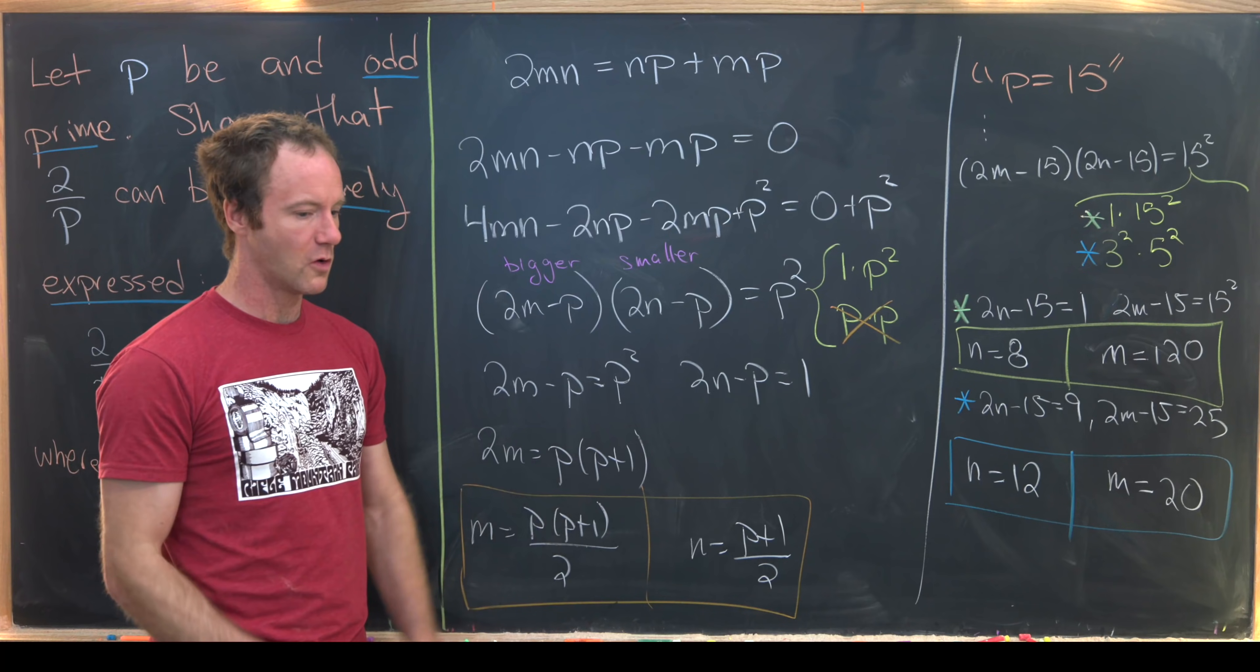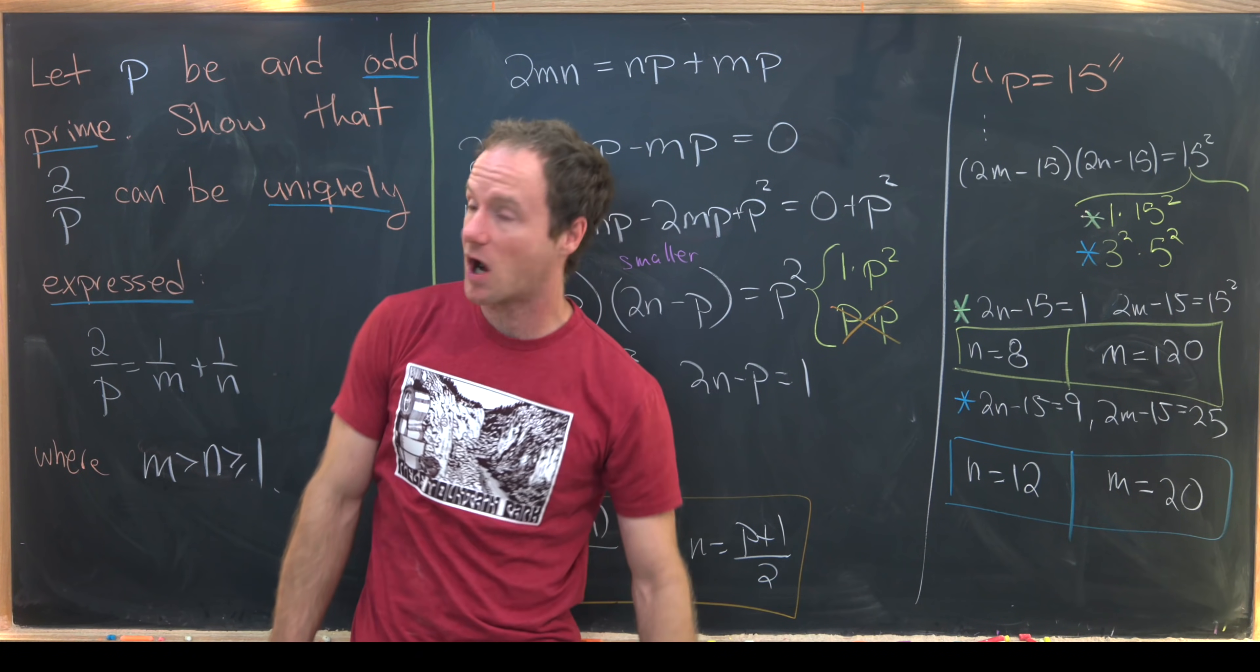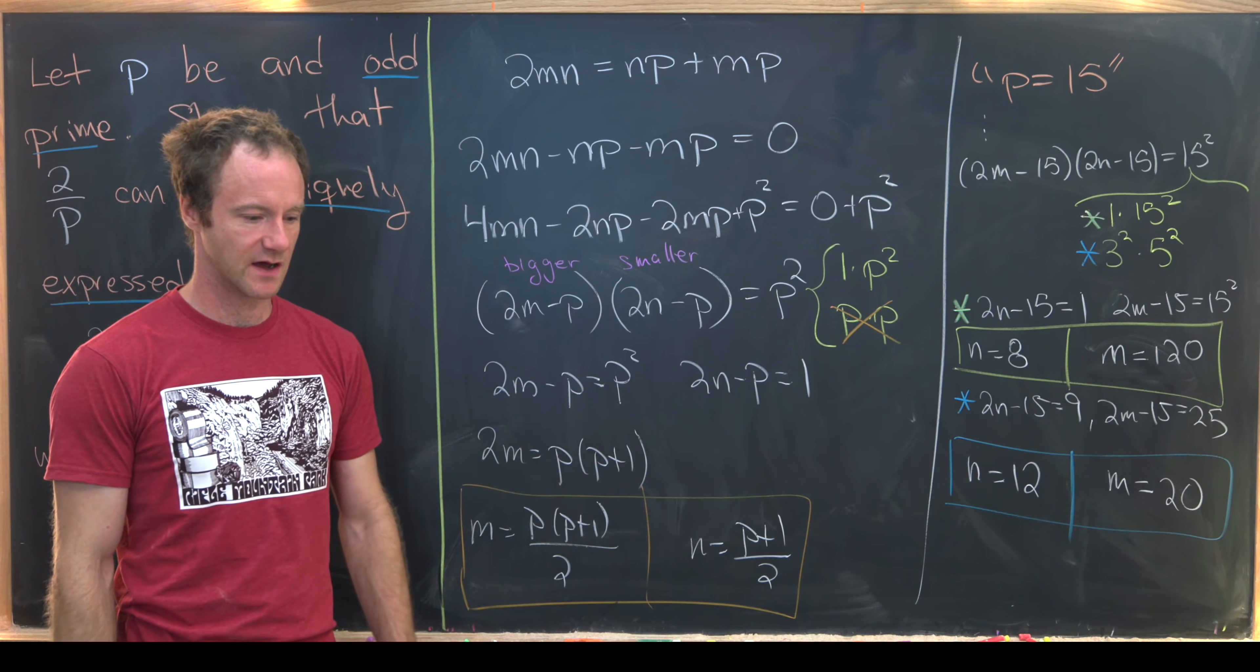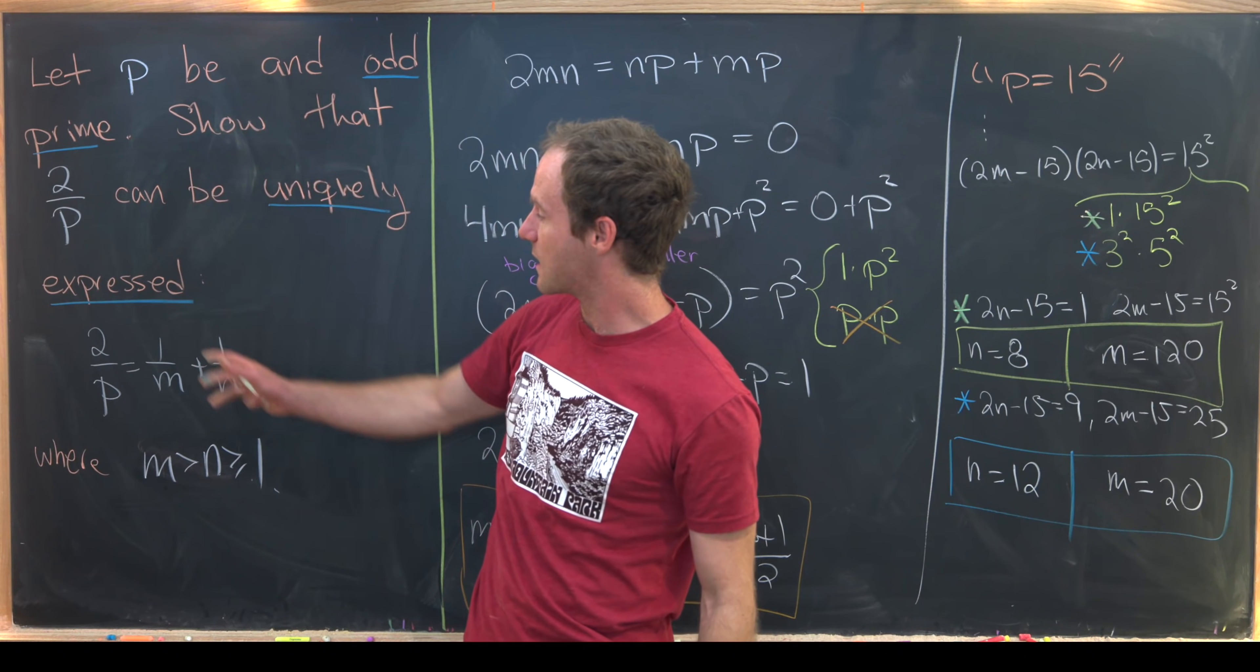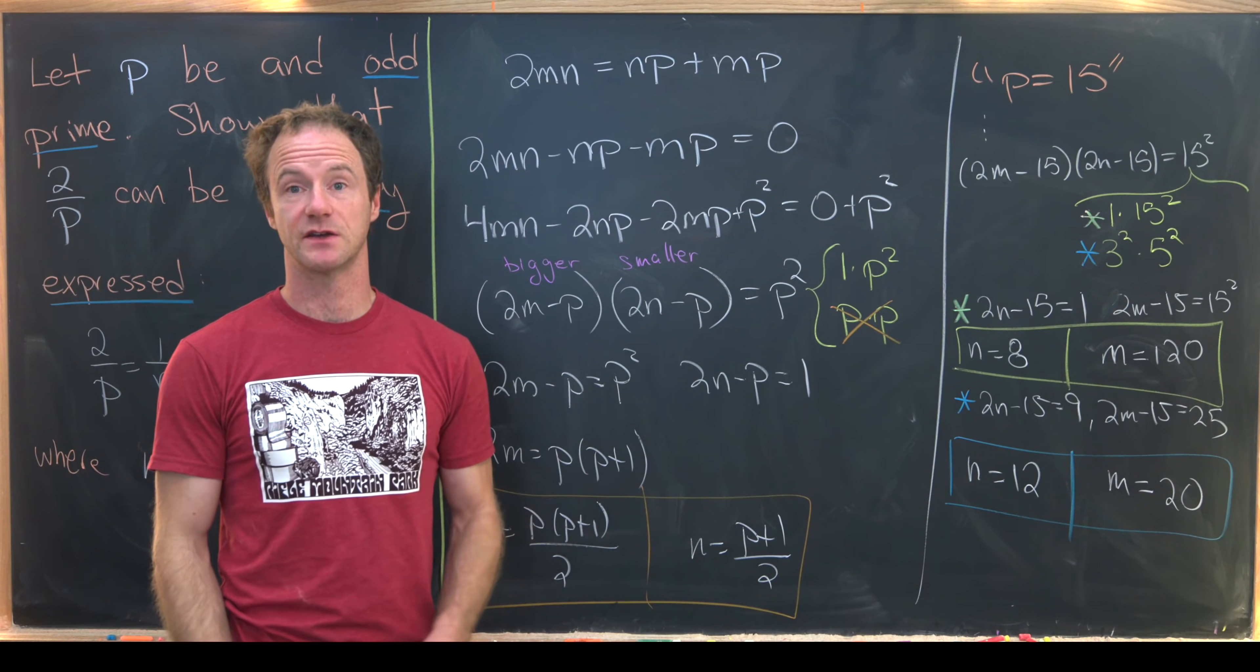Now maybe as a little bit of a homework question, post in the comments why do we need P to be an odd prime? Why doesn't 2 work in this whole setup? And what would we have to tweak about this problem so that 2 could be included? And that's a good place to stop.